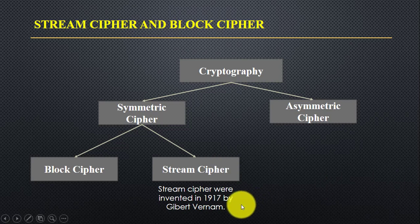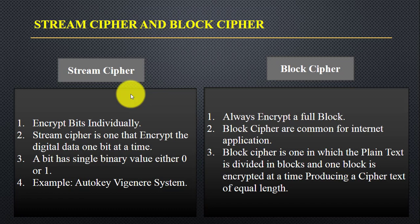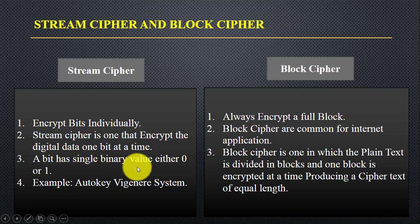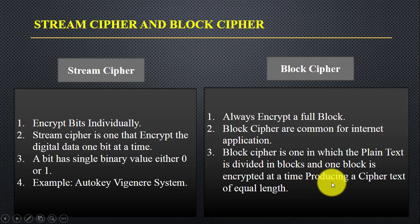Stream cipher was invented by Burnham in 1917. In the case of stream cipher, it encrypts bits individually — that is, one bit at a time. A bit has a single binary value that can be either zero or one. In the case of block cipher, it encrypts one full block at a time. The plain text is divided into blocks, one block is encrypted at a time, and it produces a cipher text of equal length.